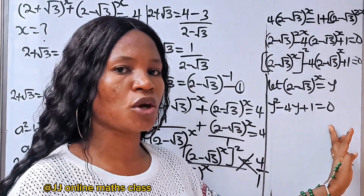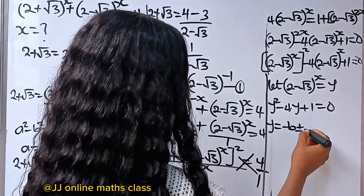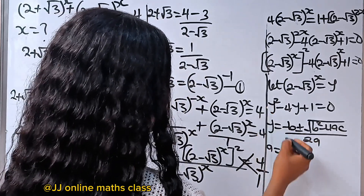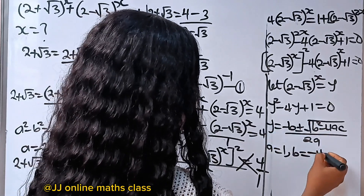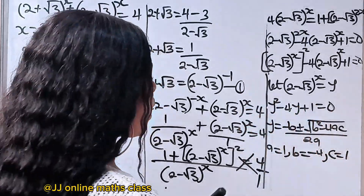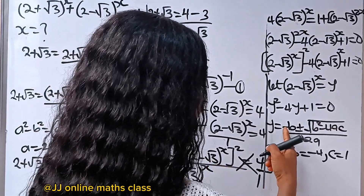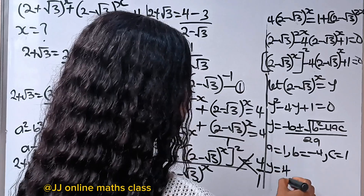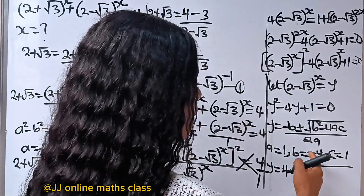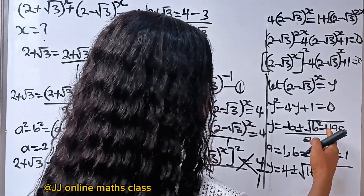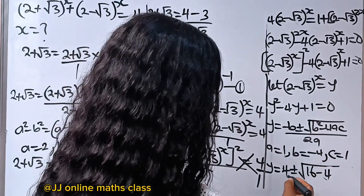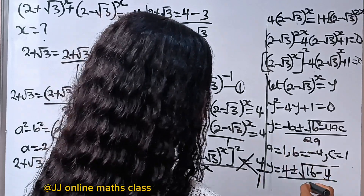Let's solve this using the quadratic formula: y equals minus b plus or minus square root of b squared minus 4ac, all over 2a. Our a is equal to 1, our b is equal to minus 4, and our c is 1. Substituting: minus b — there's already a minus in our b, so minus minus becomes plus — so we have 4 here. Plus or minus square root of 4 squared, which gives 16, minus 4 times 1 times 1 which is 4, all divided by 2 times 1, giving us 2.